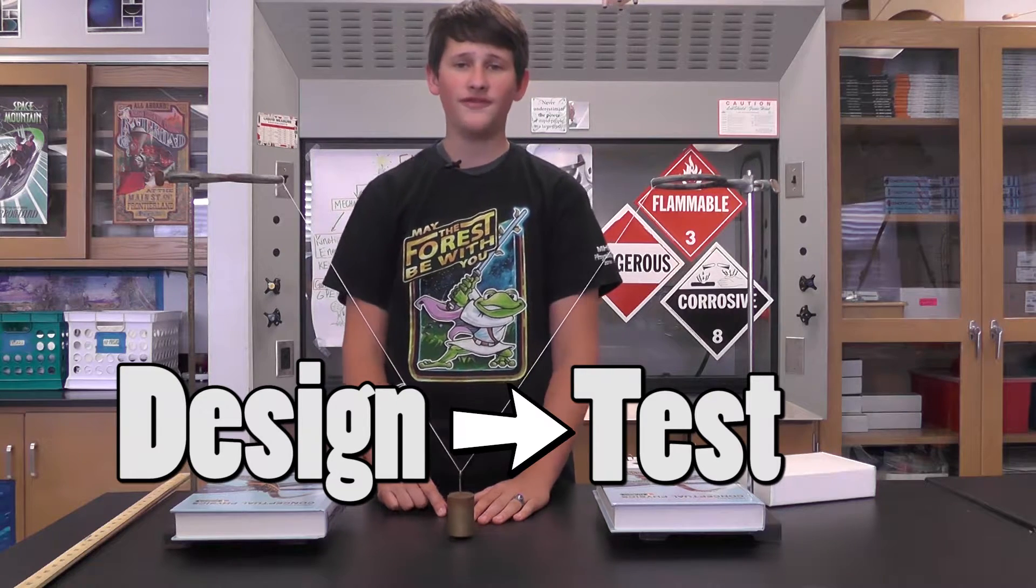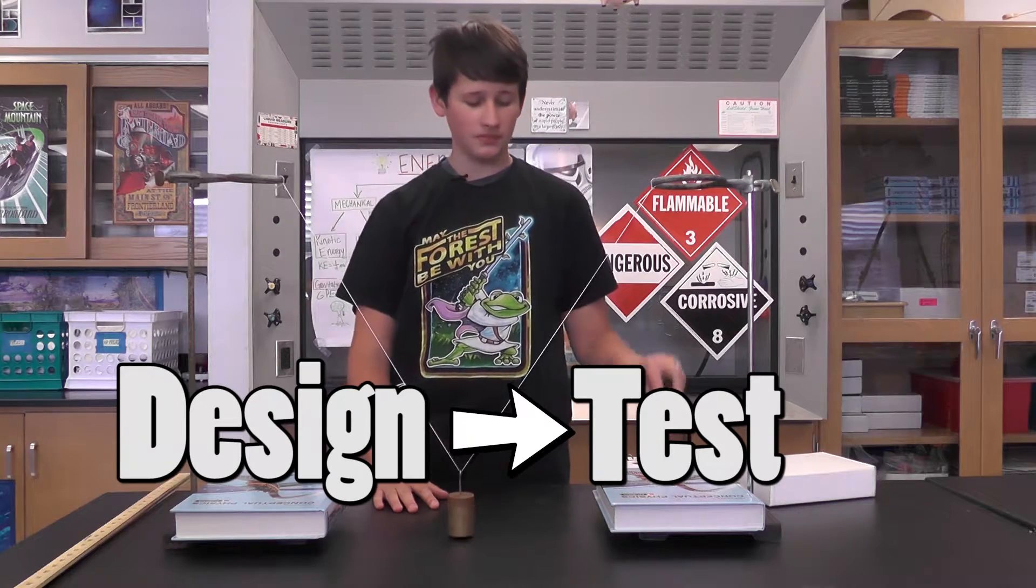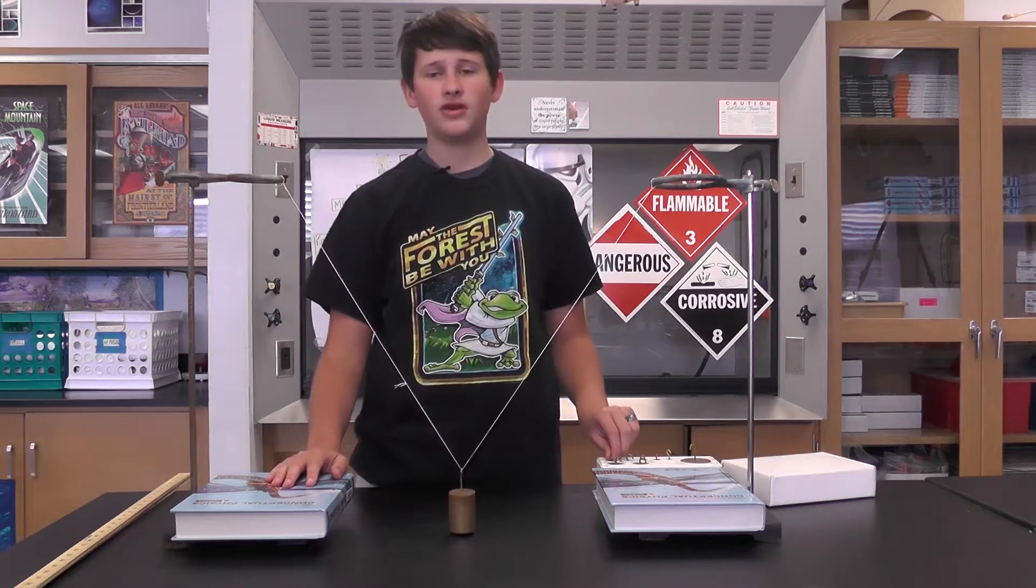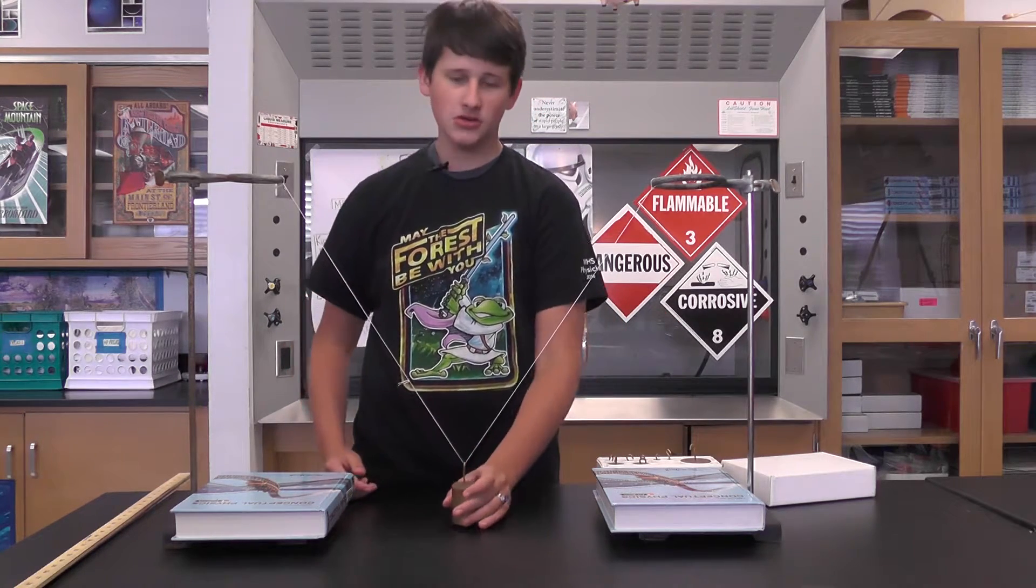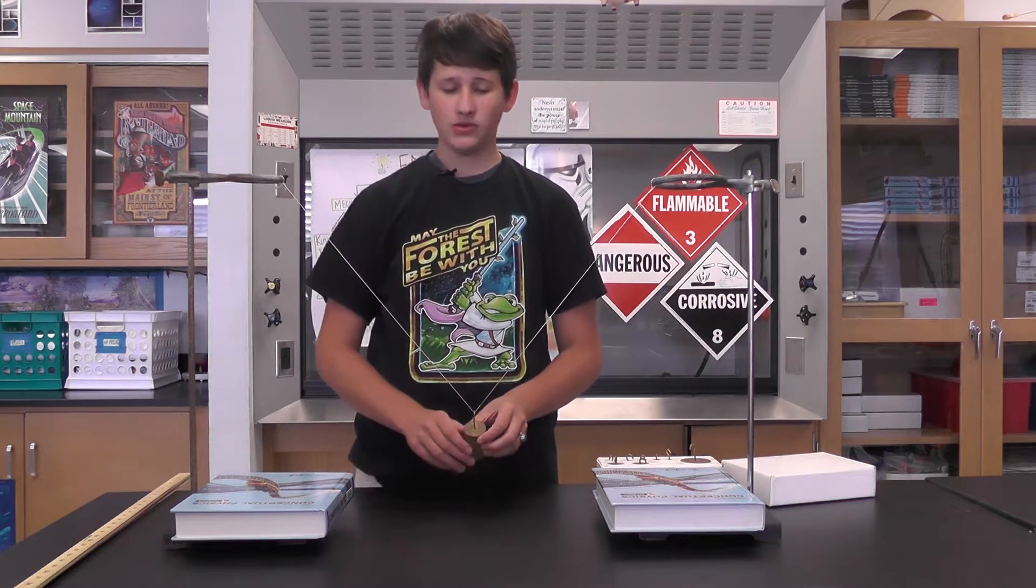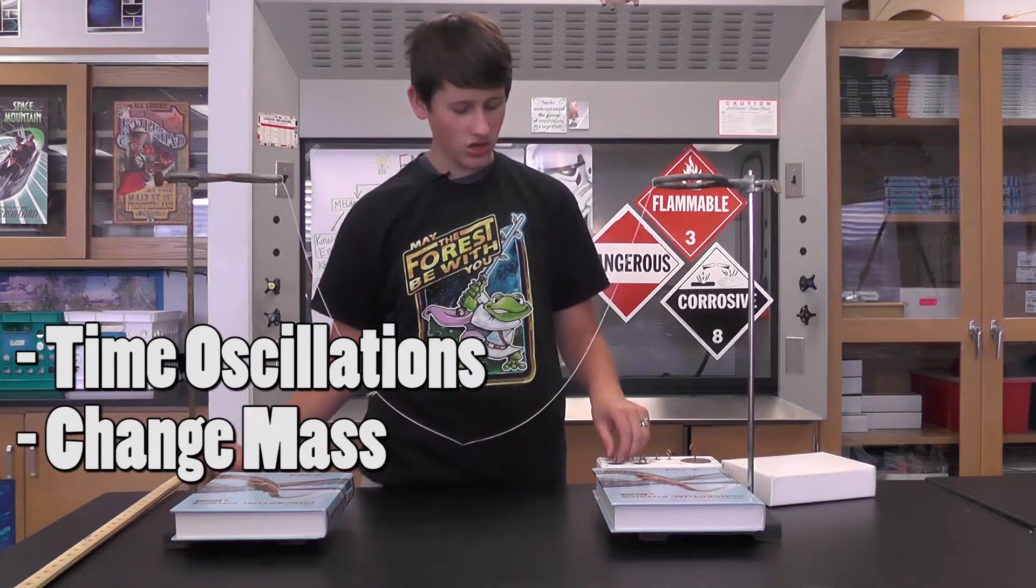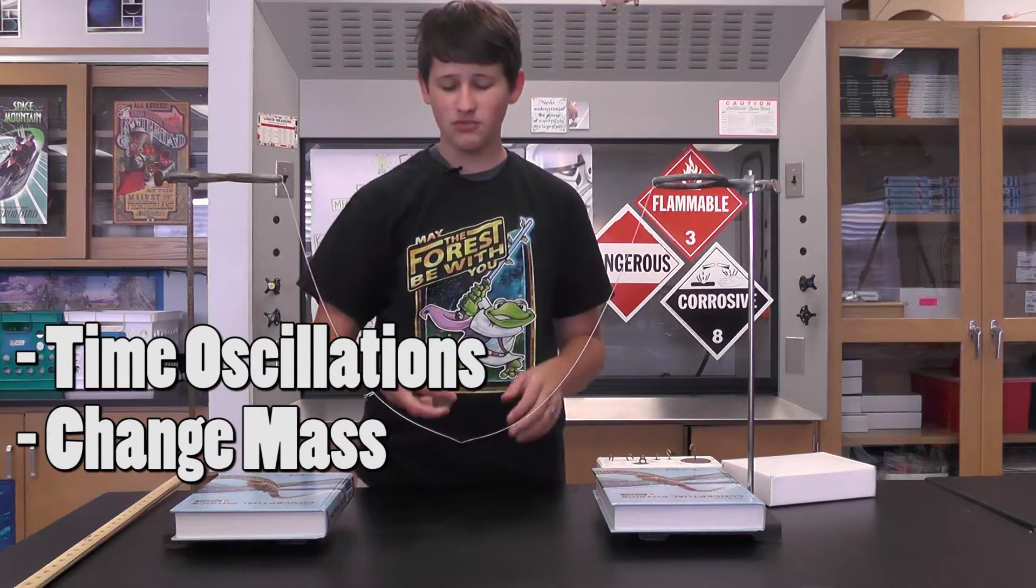Let's say we were going to test a variable, and that variable would be mass. We can do what we did for the pre-lab—we have our data already for that. So what we can do is time our oscillations and change out the mass, so we're going for a different mass here.